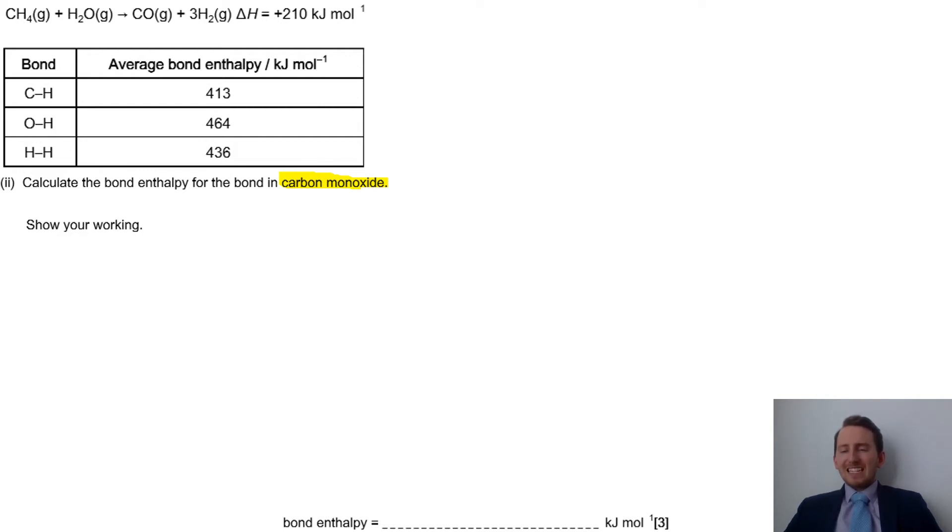So it's going to be slightly different working, ever so slightly, nothing crazy, but just something ever so slightly different just to make sure you're keeping yourself on your toes and you know what you're doing. So we need to set things out as we normally would do, so we're going to put it down into stages. The first thing to do is to work out the enthalpy for the bonds broken, so that's going to be our reactants.